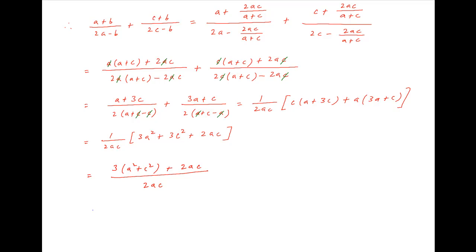We know that the arithmetic mean of two numbers is greater than or equal to their geometric mean. If we let those two numbers be a² and c², then their arithmetic mean will be greater than or equal to their geometric mean.